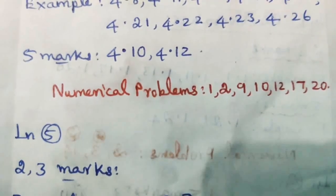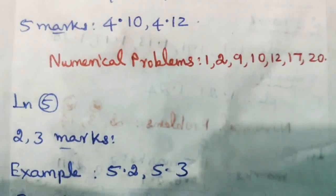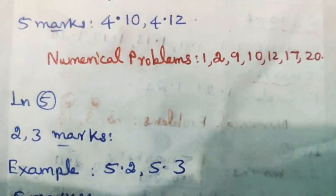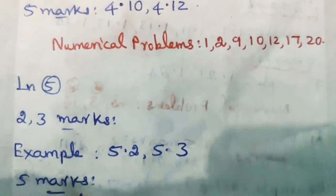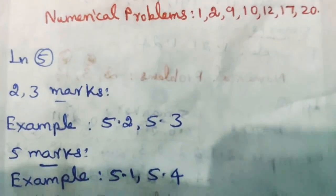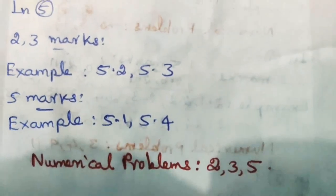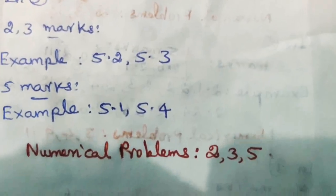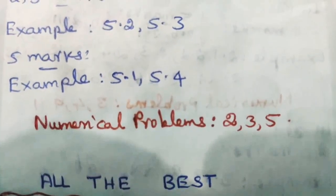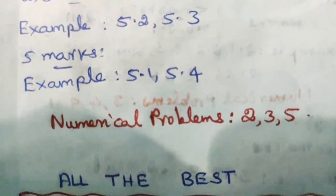Lesson 5, 2 mark and 3 marks examples: 5.2 and 5.3. The next 5 marks examples: 5.1 and 5.4. Numerical problems: 2, 3, 9, 5. So here are the first volume of possibilities on the problems.